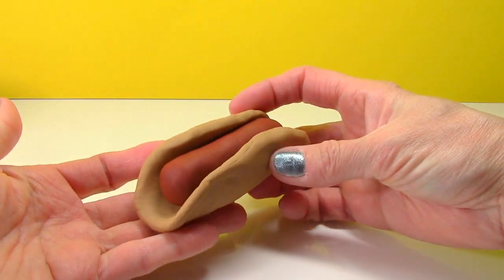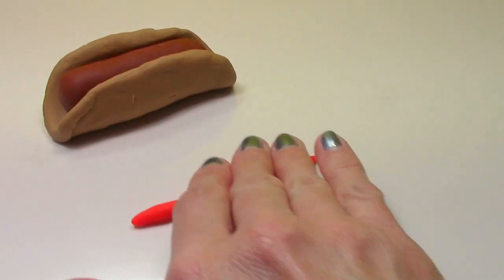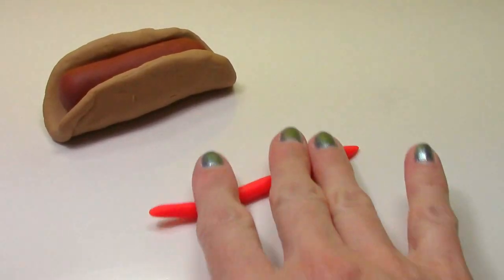And now we need to add some ketchup and mustard. Now I'm just rolling out some red Play-Doh to use for our ketchup.